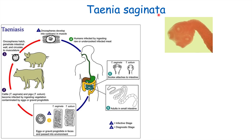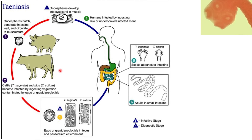Next, let's talk about Taenia saginata. It uses the same mechanism as Taenia solium, except in this case cattle is the intermediate host. A patient infected with Taenia saginata releases eggs or proglottids into the environment, cattle then ingest contaminated vegetation, and the oncospheres hatch, penetrate the intestinal wall of the cow, circulate through the cow, and develop into cysticercae in muscle. The patient then consumes undercooked or uncooked beef products.